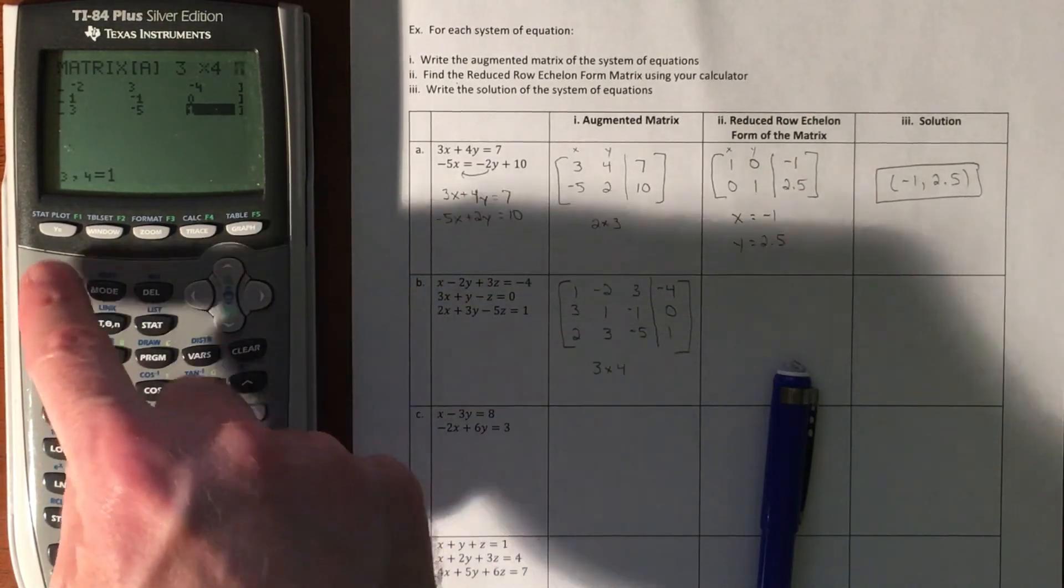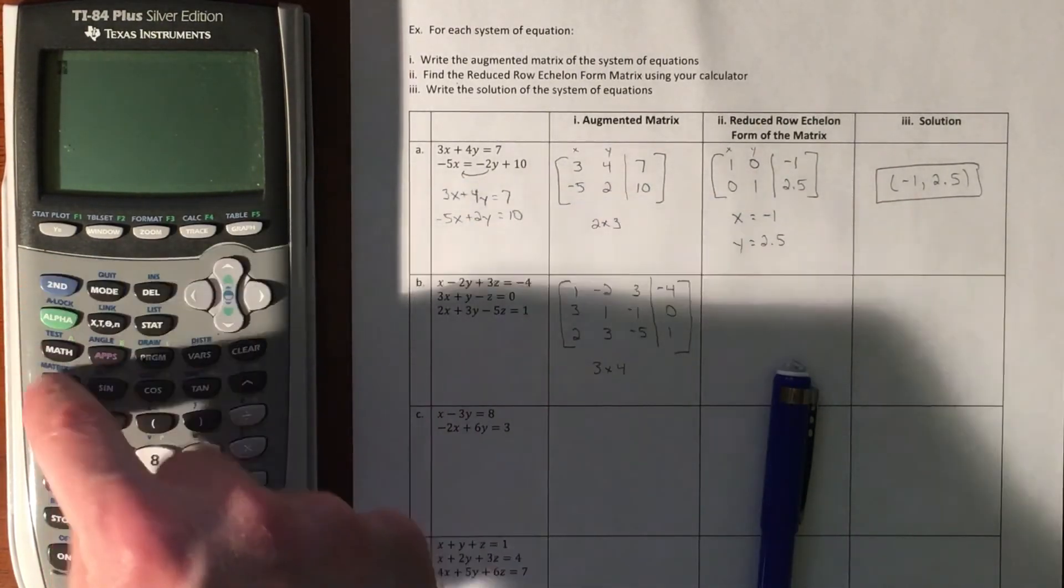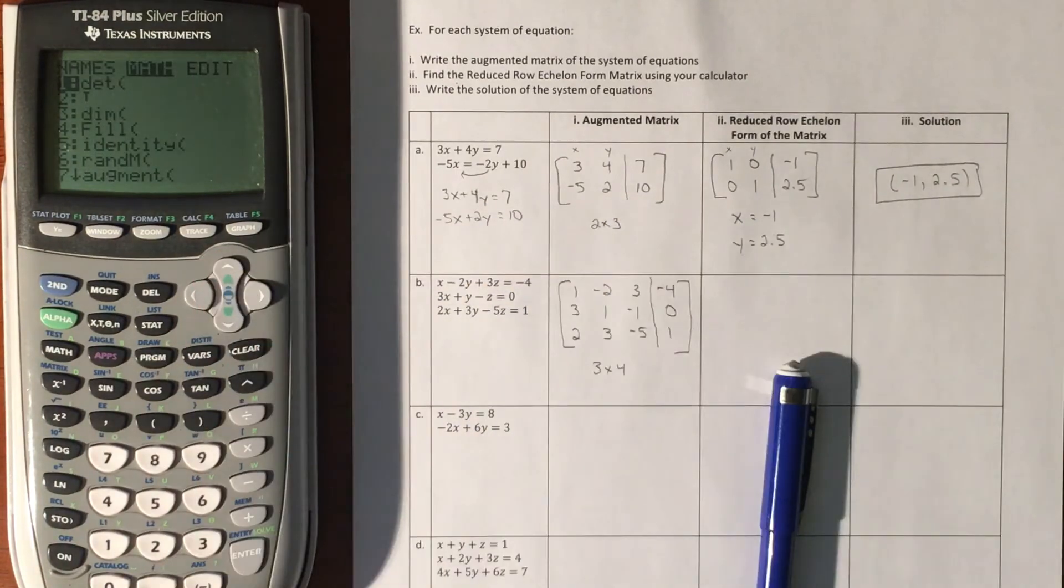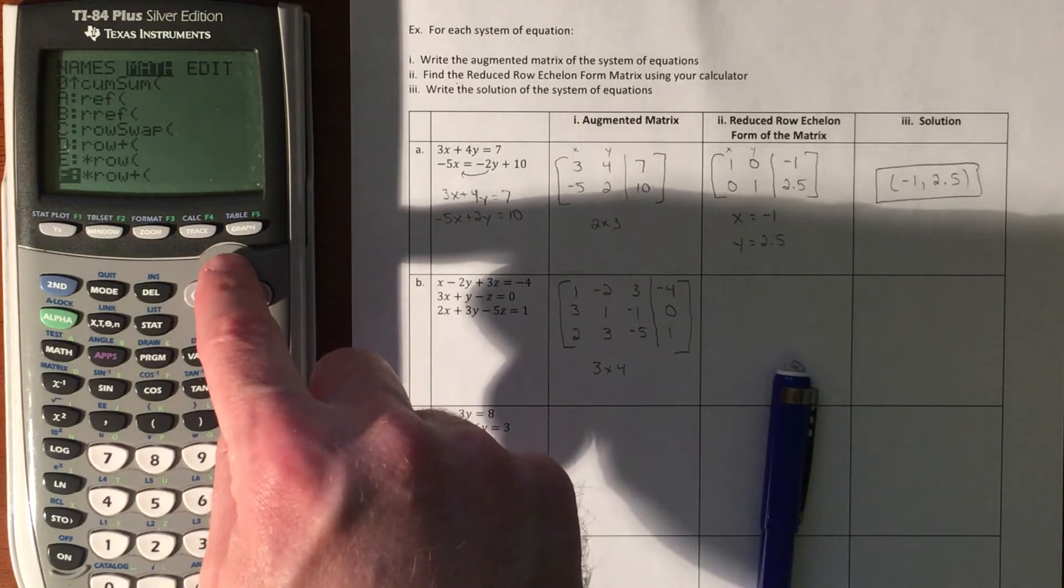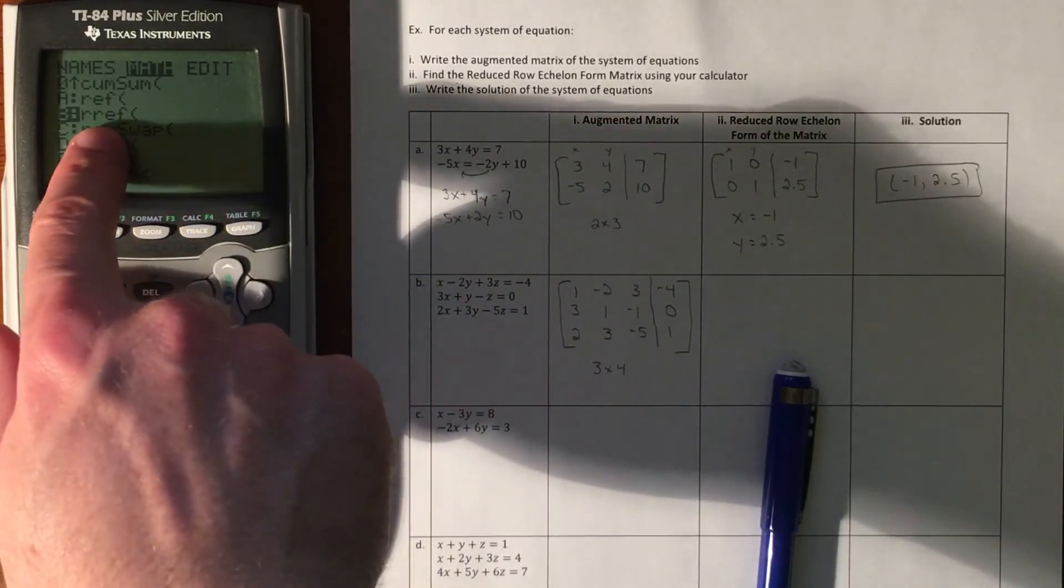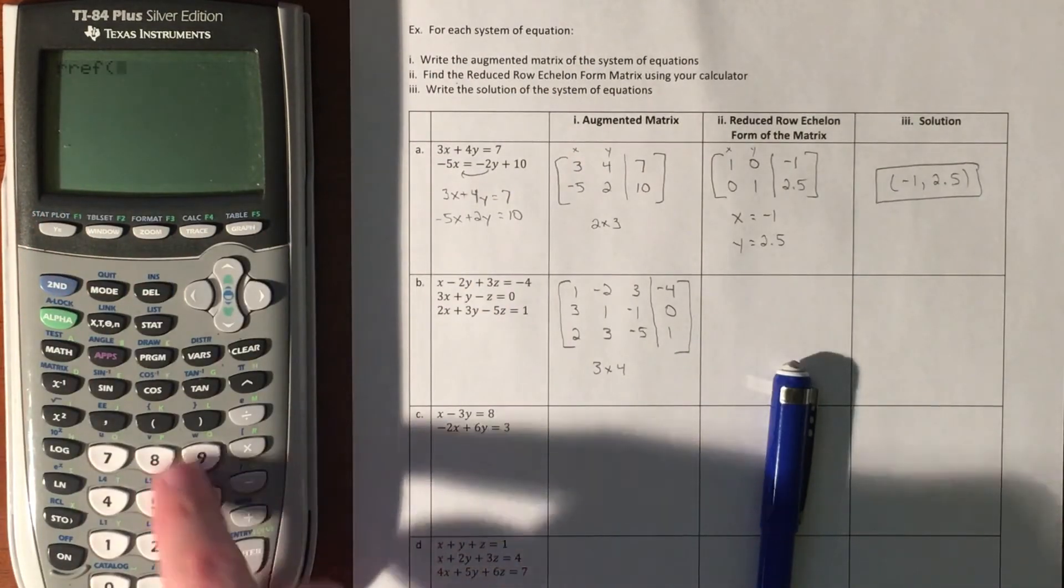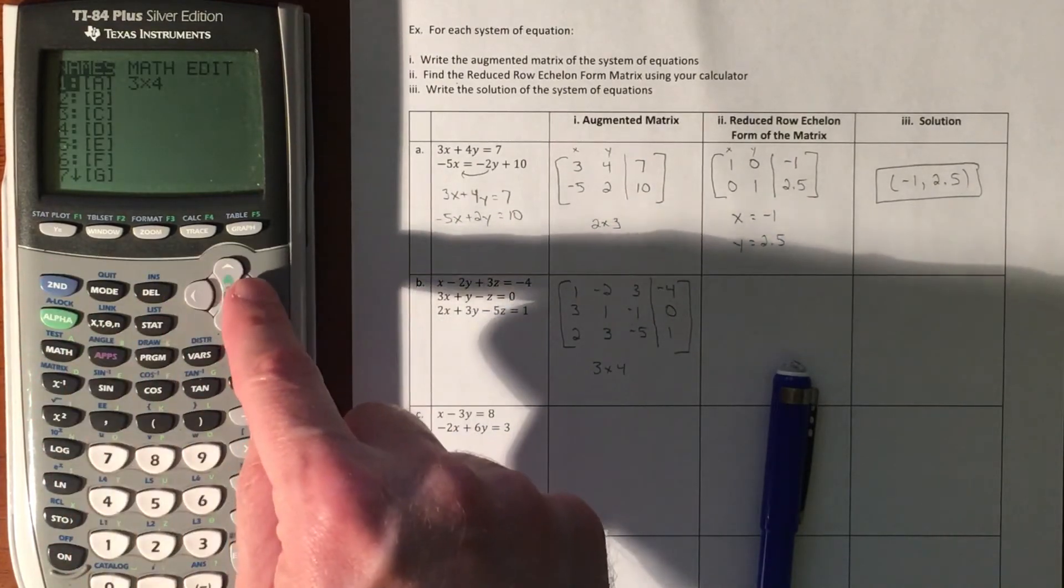Everything's filled in. I'll quit out of that. I'm going to go back into matrix, and math is where we're going to do the reduced row echelon form. I'm going to try the bottom, and there is my reduced row echelon form of matrix A.